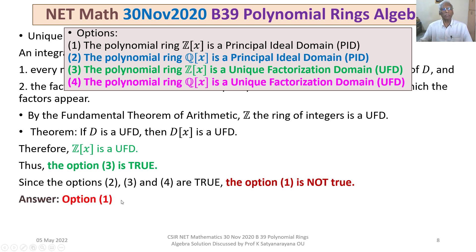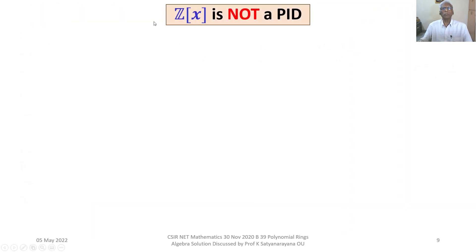But I want to show you what it means that option 1 is not true — that is, the polynomial ring Z[X] is not a PID. To show this, we will exhibit an ideal which is not a principal ideal. Let us look at that example and write down the proof that Z[X] is not a PID.